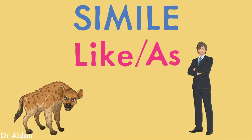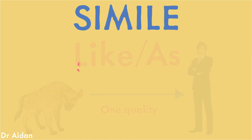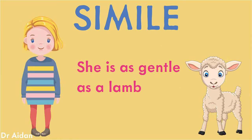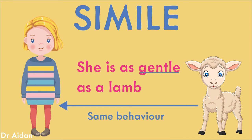The simile also tends to focus on one quality being transferred from one thing to another. For example, you could say that she is as gentle as a lamb. Here we take one perceived quality of a lamb's gentleness and transfer it to a person. The idea is that a lamb is one of the least aggressive of creatures and we can expect the same type of behaviour from the person being compared.